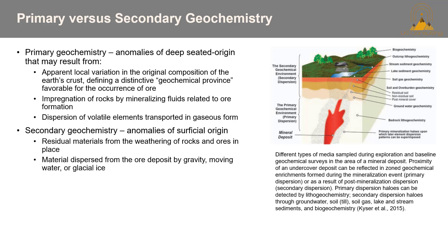For secondary geochemistry, these are anomalies of surficial origin — residual material from the weathering of rocks and ores in place — and material dispersed from the ore by gravity, moving water, or glacial ice. The diagram at right shows different types of media sampled during exploration and baseline geochemical surveys of a mineral deposit. The proximity of an undercover deposit can be reflected in zoned geochemical enrichments formed during the mineralization event, which would be primary dispersion, or as a result of post-mineral dispersion. Primary halos are detected mainly by lithogeochemistry and secondary halos through groundwaters, soils, tills, stream sediments, etc.